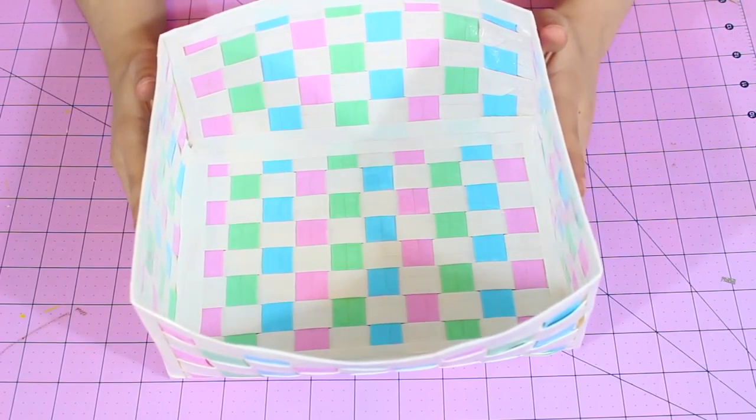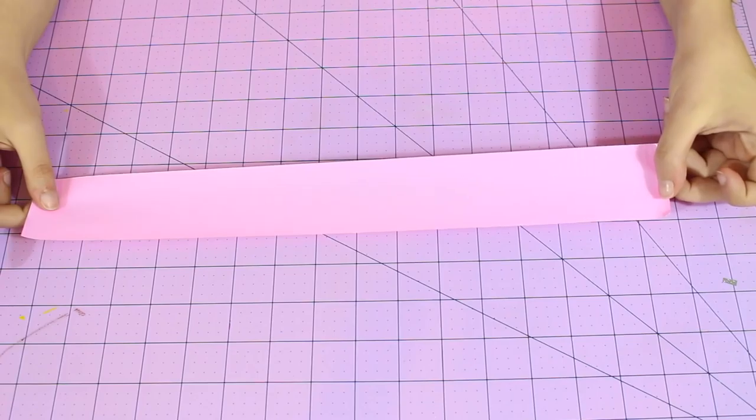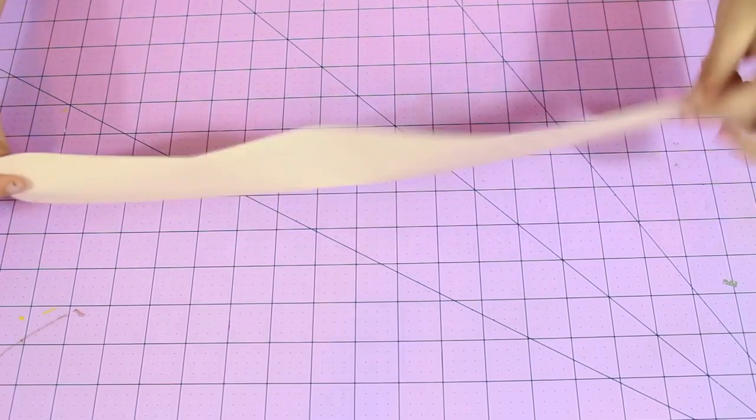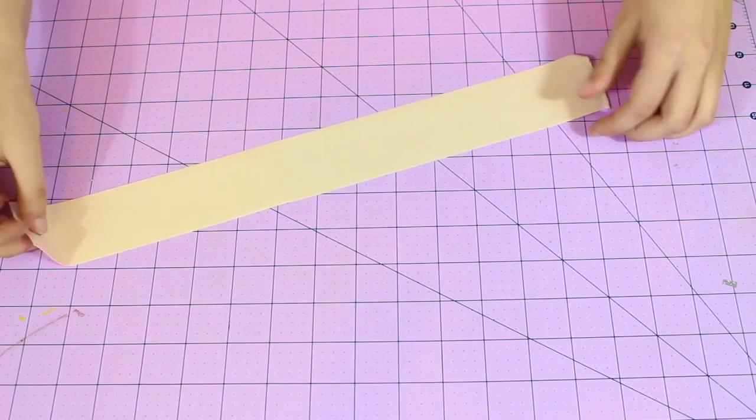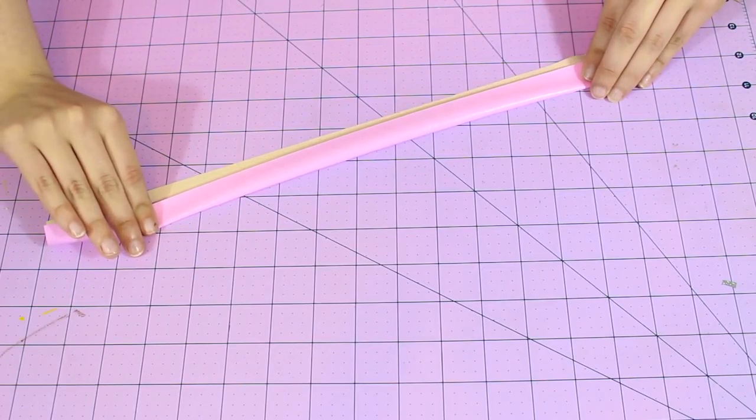And now we're just going to quickly make the strap for this. So right here, I have a strip of pink that is 16 inches long, and we're just going to do the same thing that we did for our woven pieces. I'm just going to fold it onto itself, leaving a little bit of sticky at the bottom.